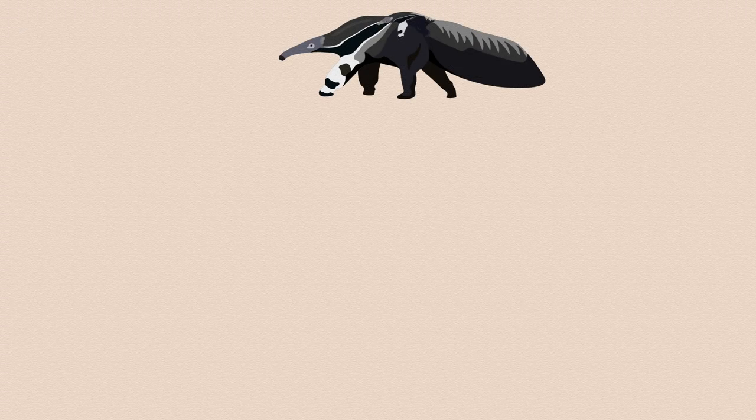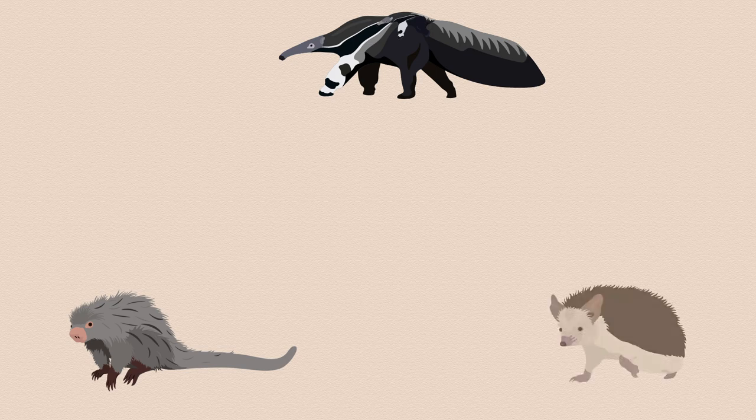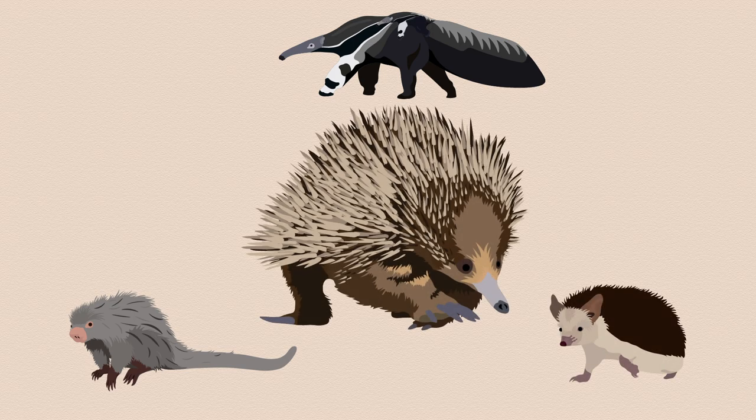Sometimes referred to as spiny anteaters and commonly compared to porcupines and hedgehogs, echidnas are in fact only distantly related to all of them.